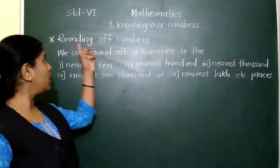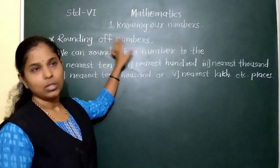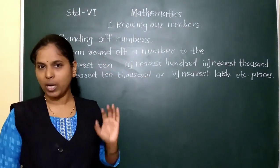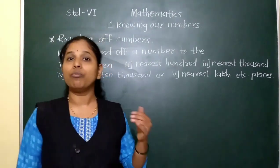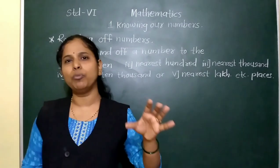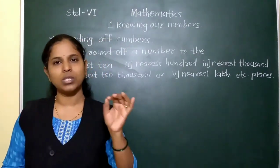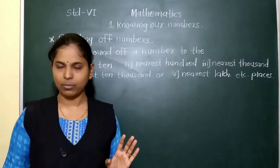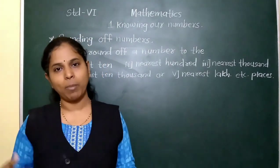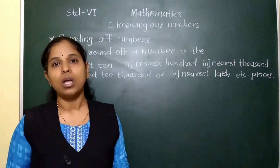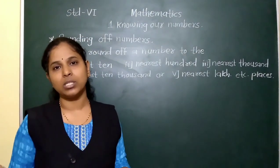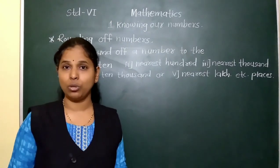In estimation of numbers, the next concept is rounding of numbers. What is meant by rounding of numbers? Suppose the cost of books is rupees 1,628. When we go out from our house and take money, do we take the exact amount 1,628? No — we may take 1,700 or 1,630.